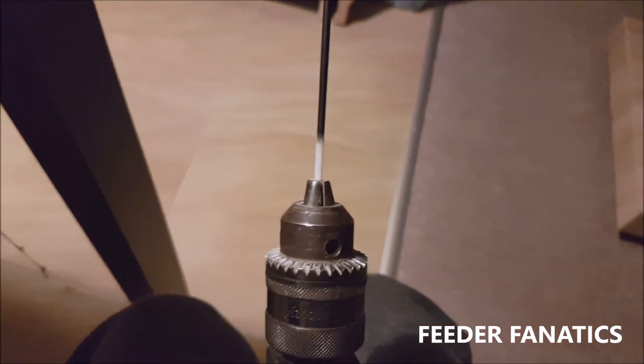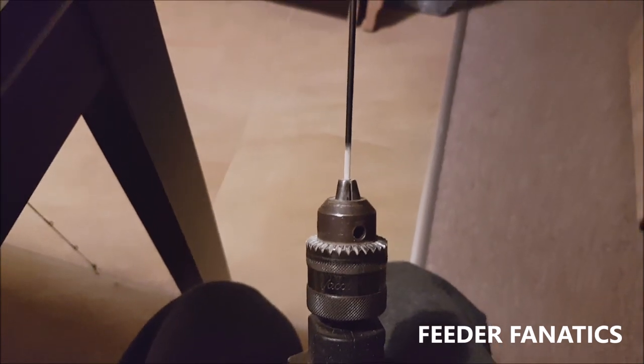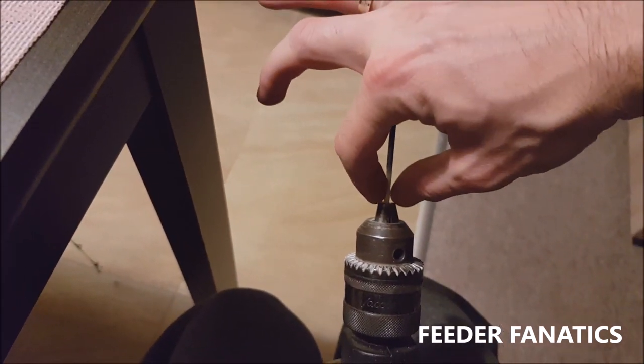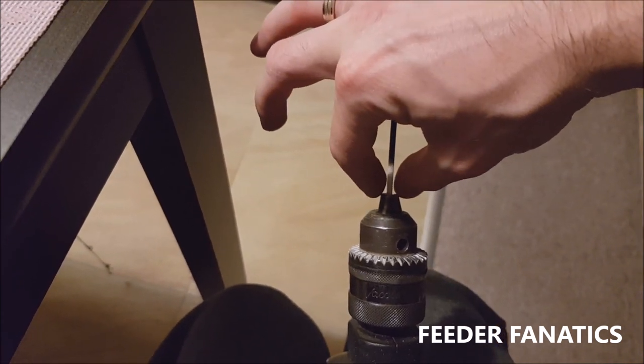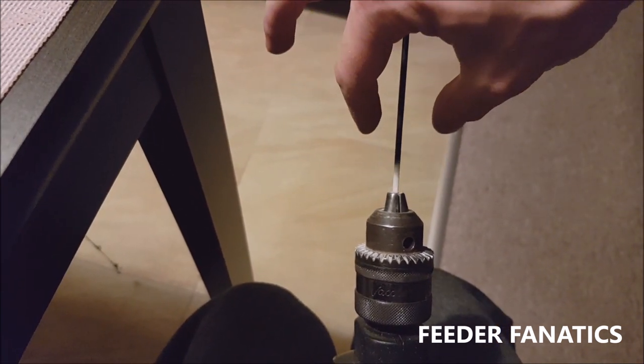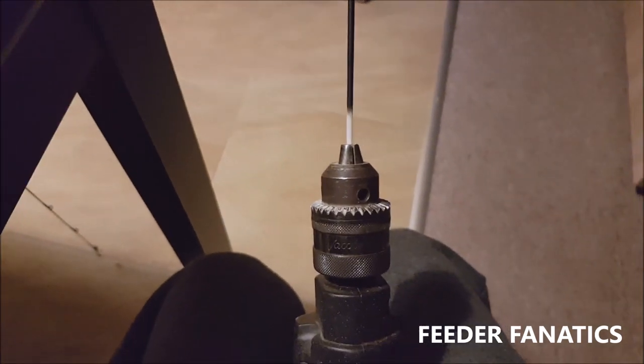No tak, metodą prób i błędów sobie dopasowujemy. Pamiętajcie o tym, że tu ma być taki jakby kształt takiego pół stożka, żeby ona na wcisk wchodziła do wędziska.